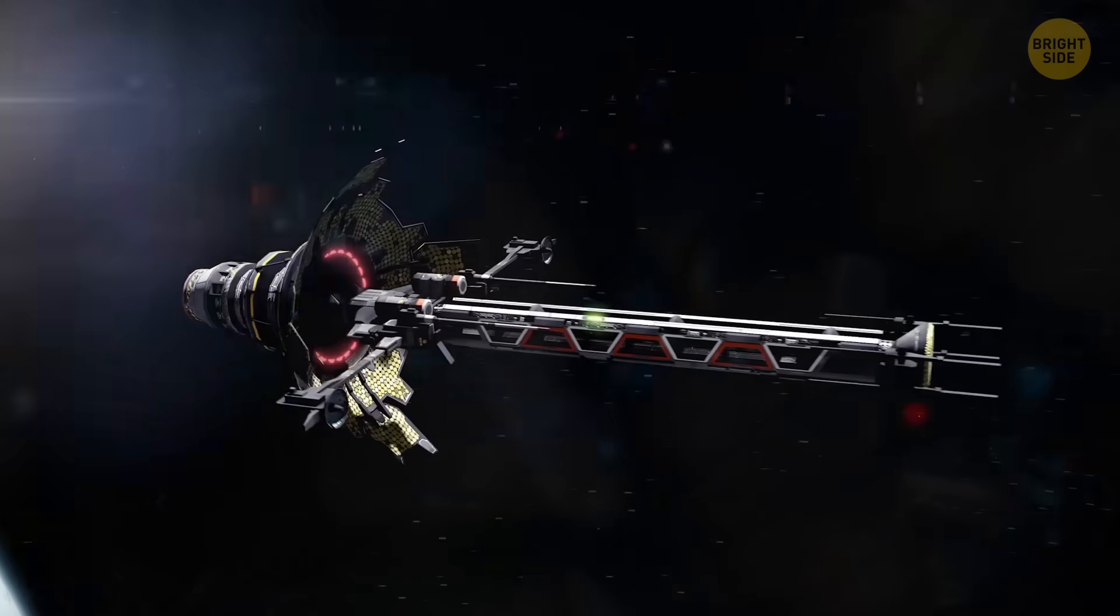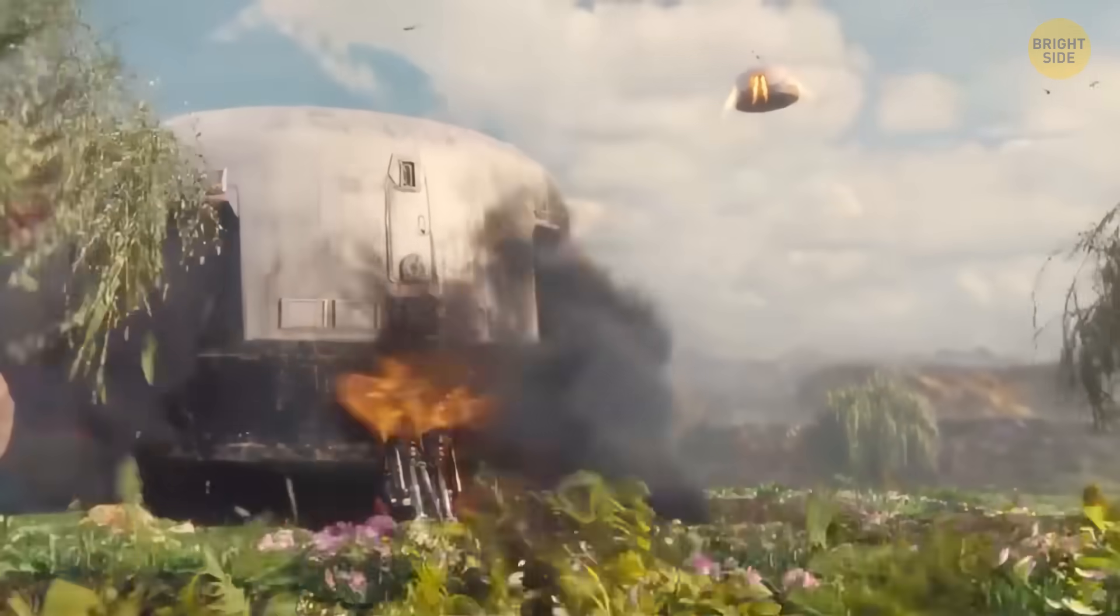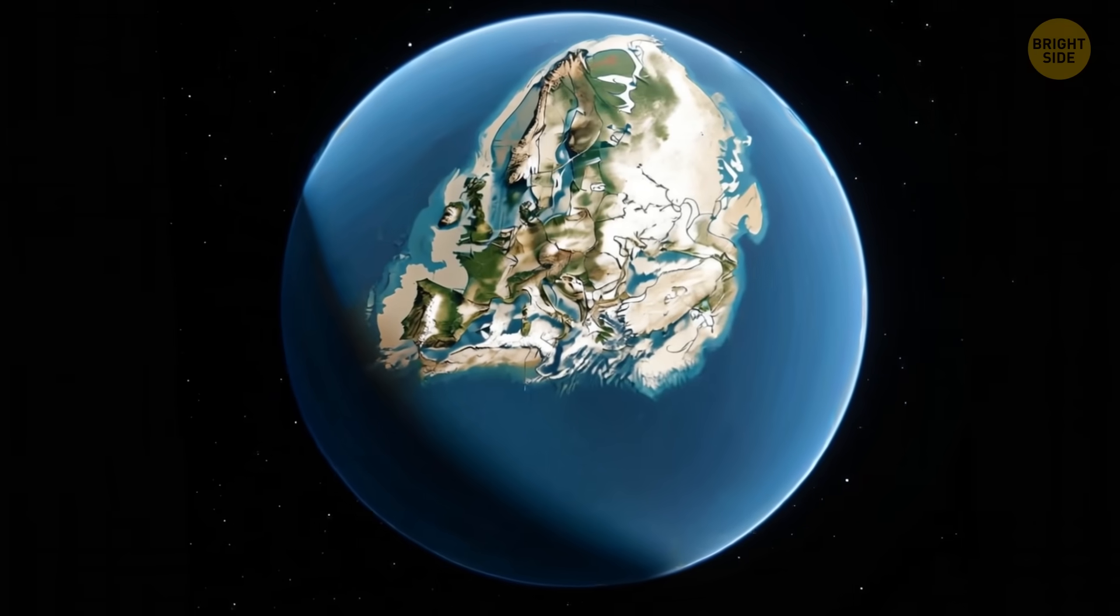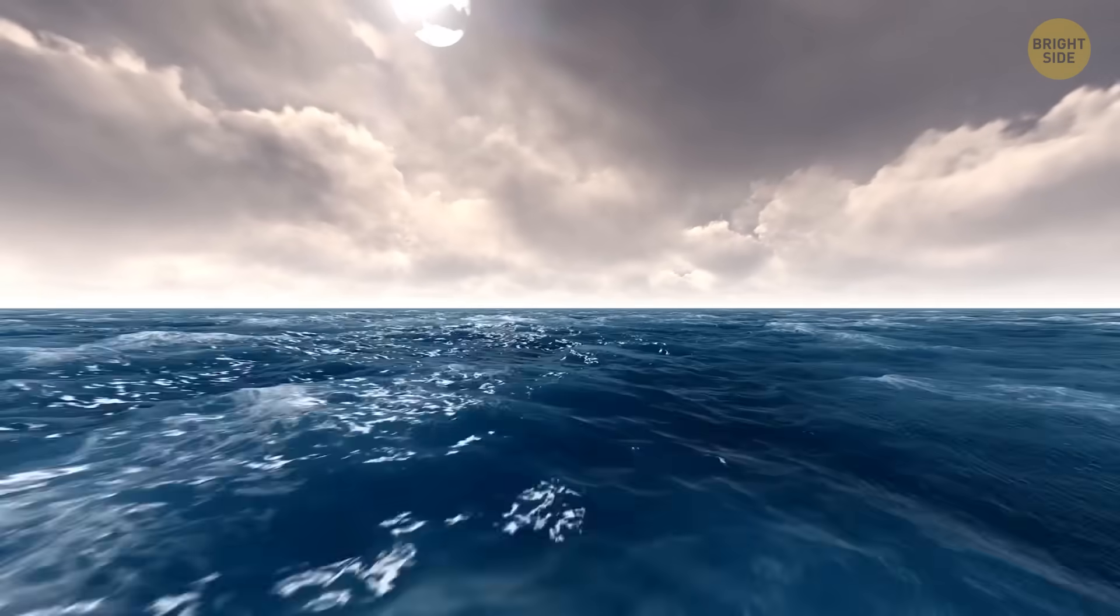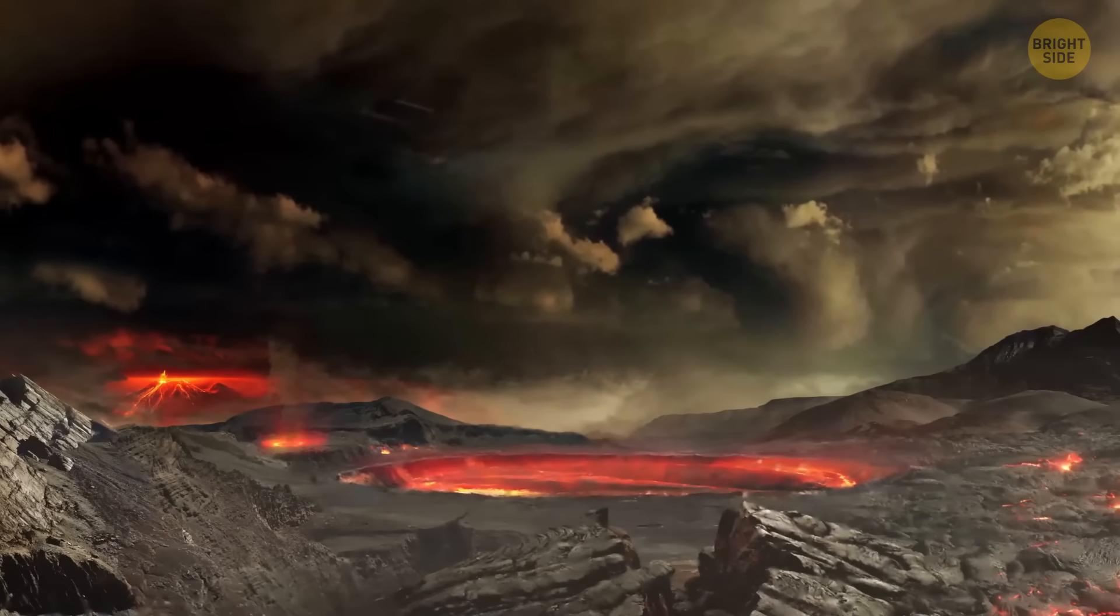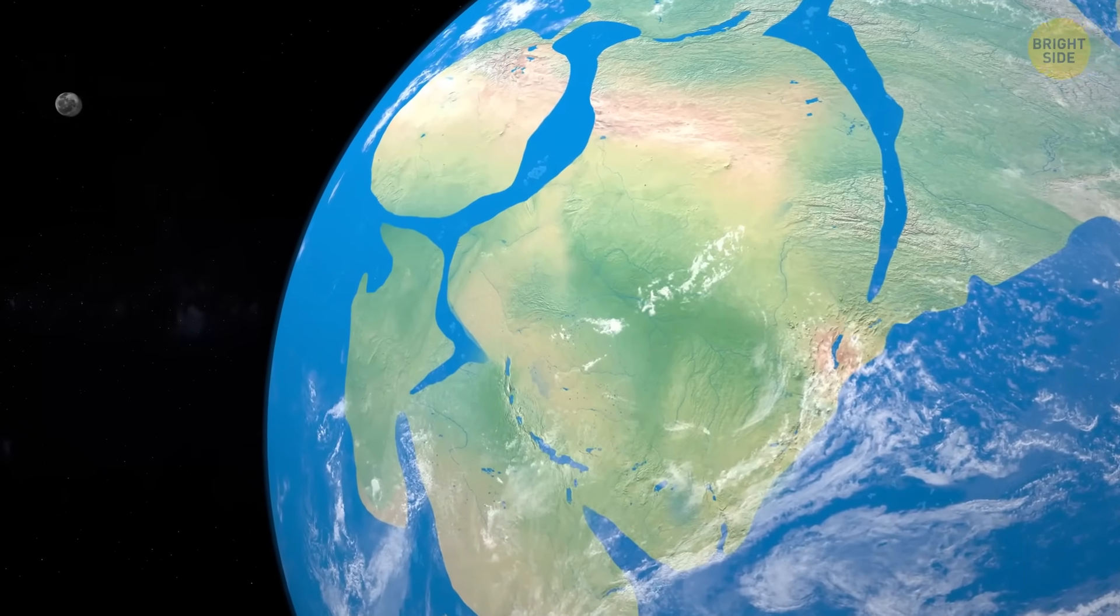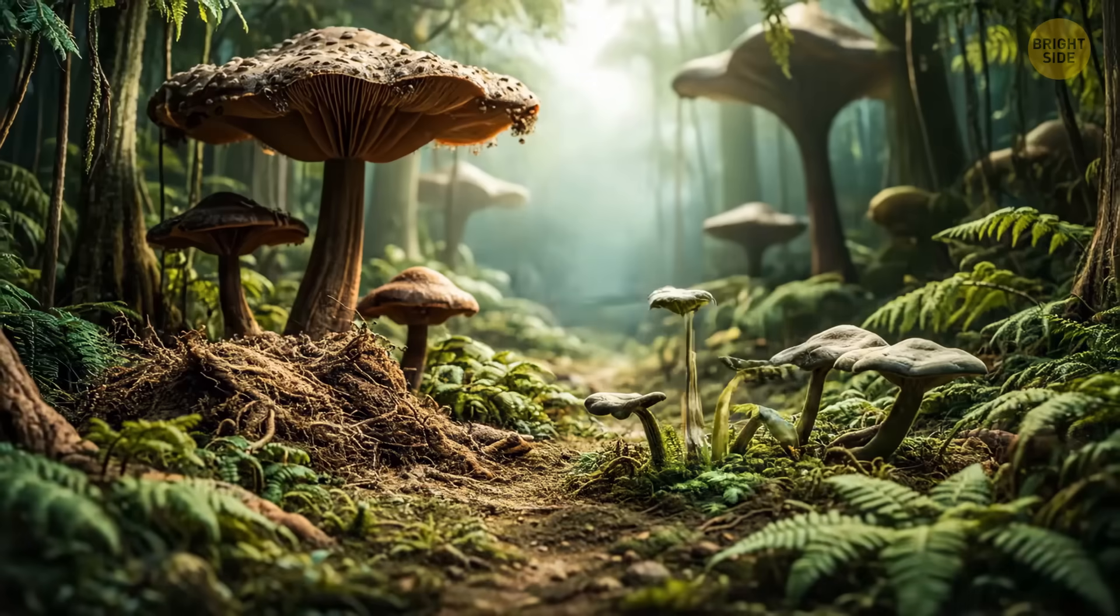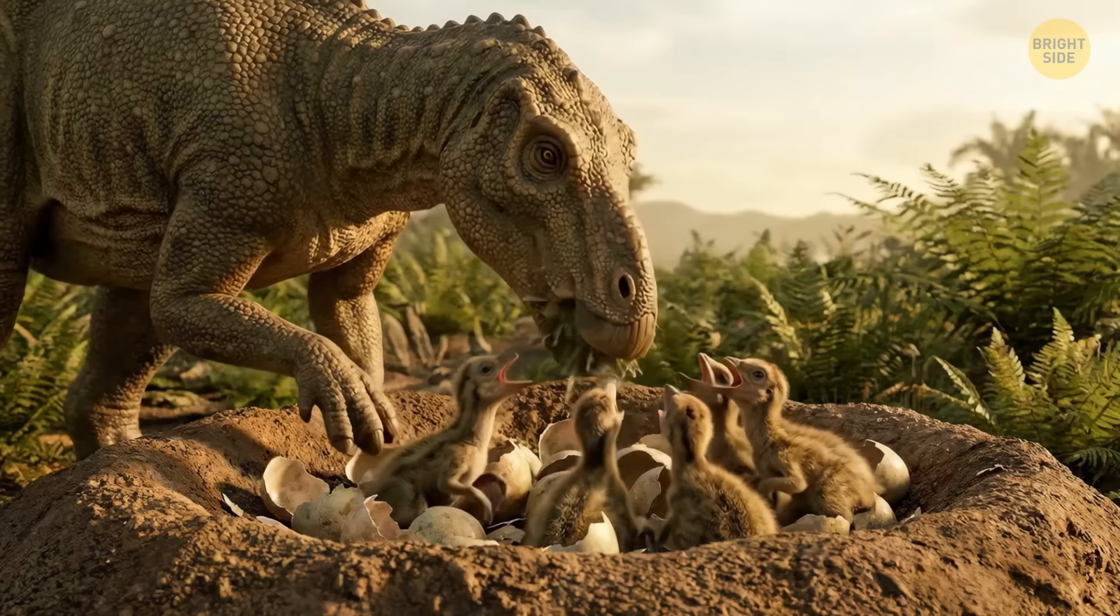If you had landed on Earth 1.5 billion years in the past, you wouldn't have recognized our planet. At that time, all the land was stuck together in one giant supercontinent called Nuna, surrounded by an endless ocean. If you had stuck around, you'd have witnessed a planetary-scale disaster: Nuna falling apart. But the most amazing thing is that when Nuna started breaking apart, it kicked off changes that made Earth a much better place for life.